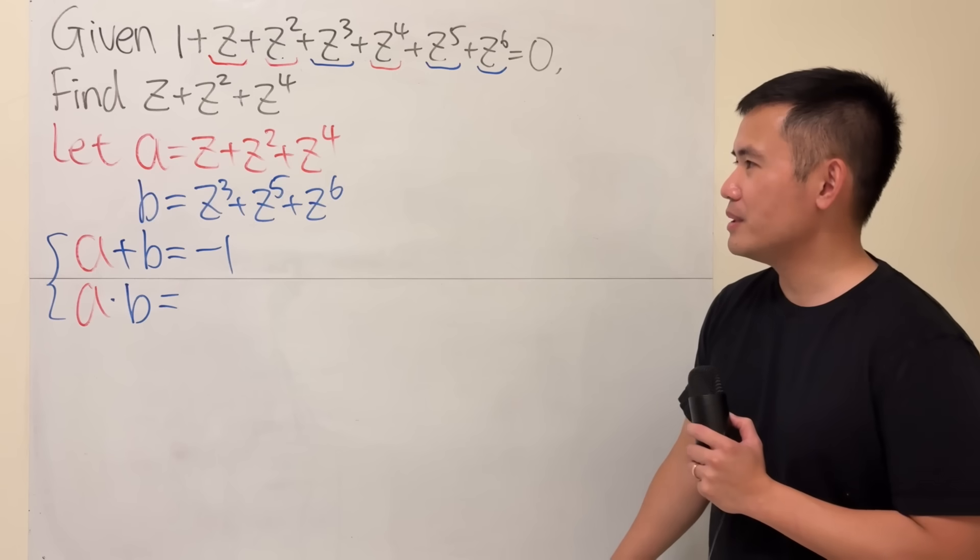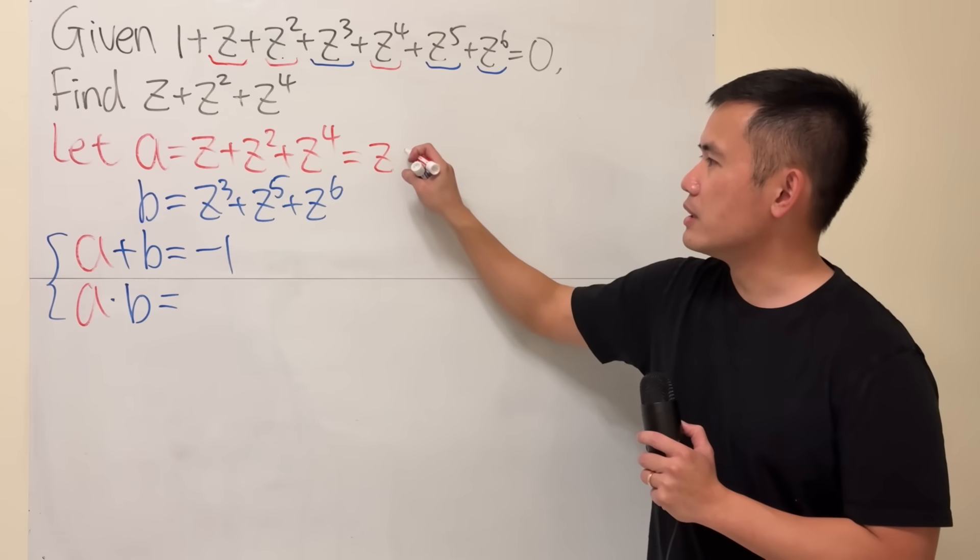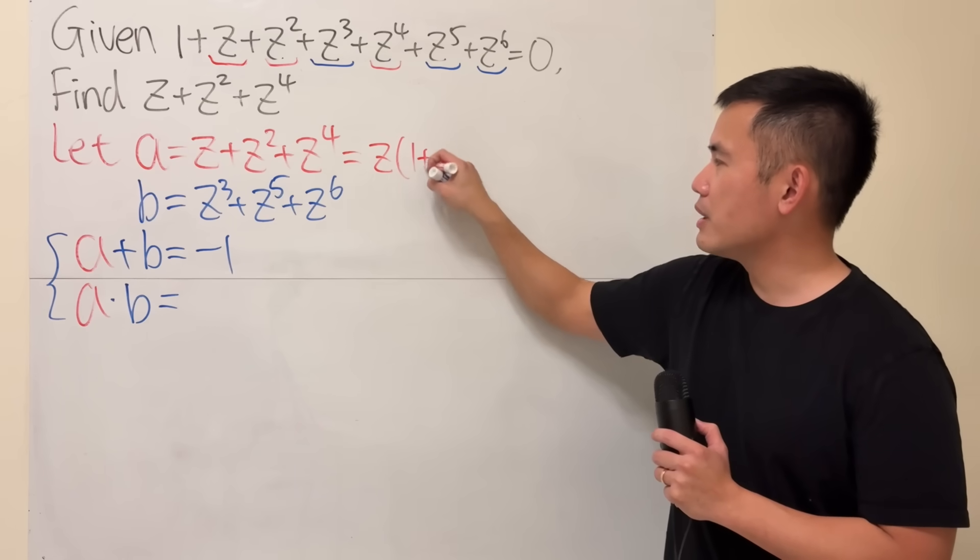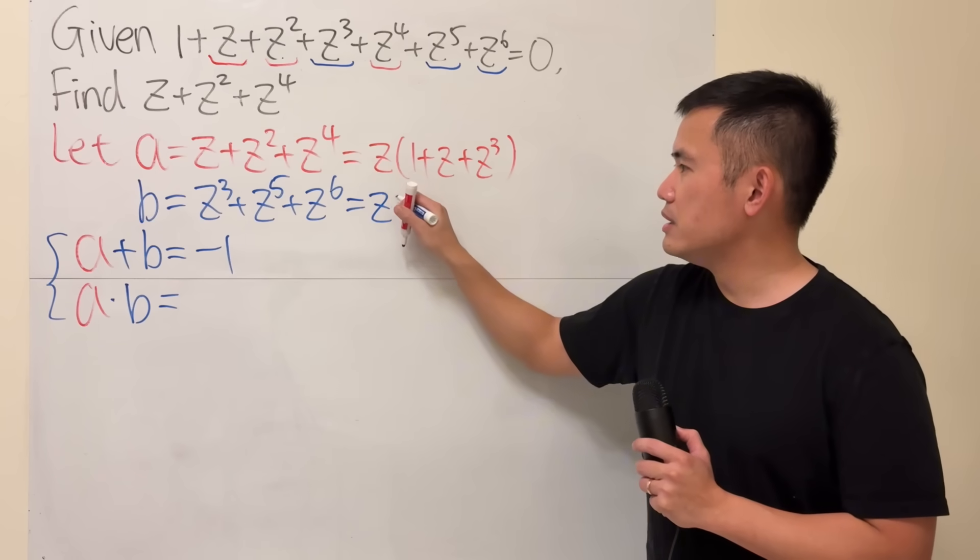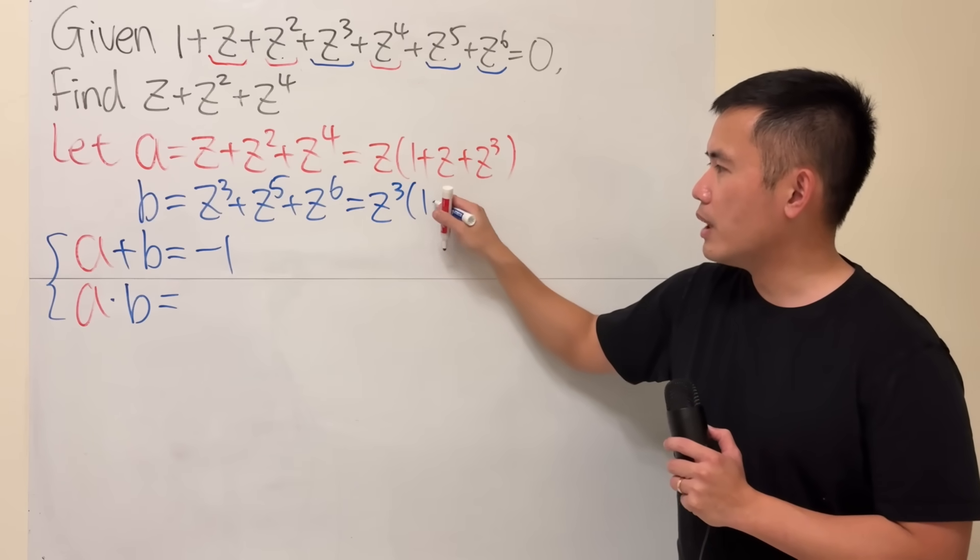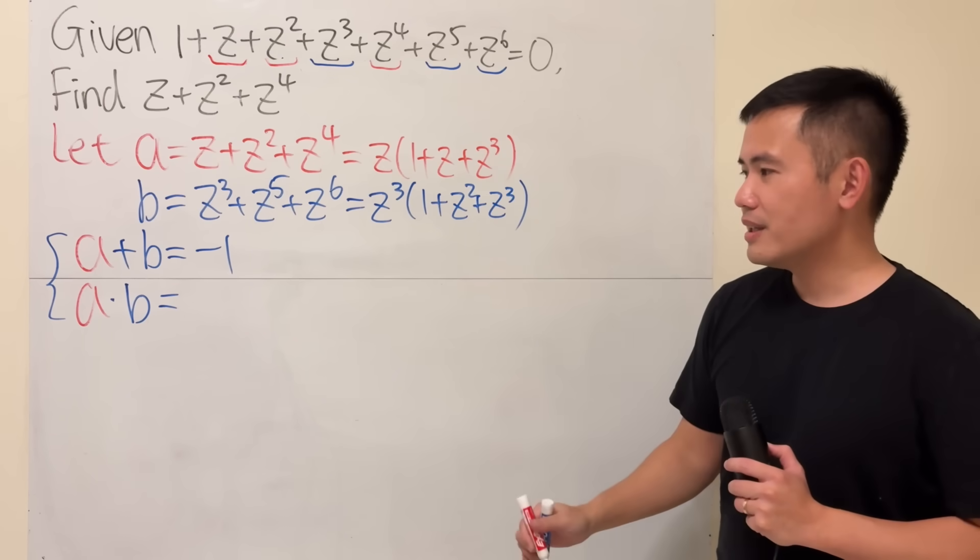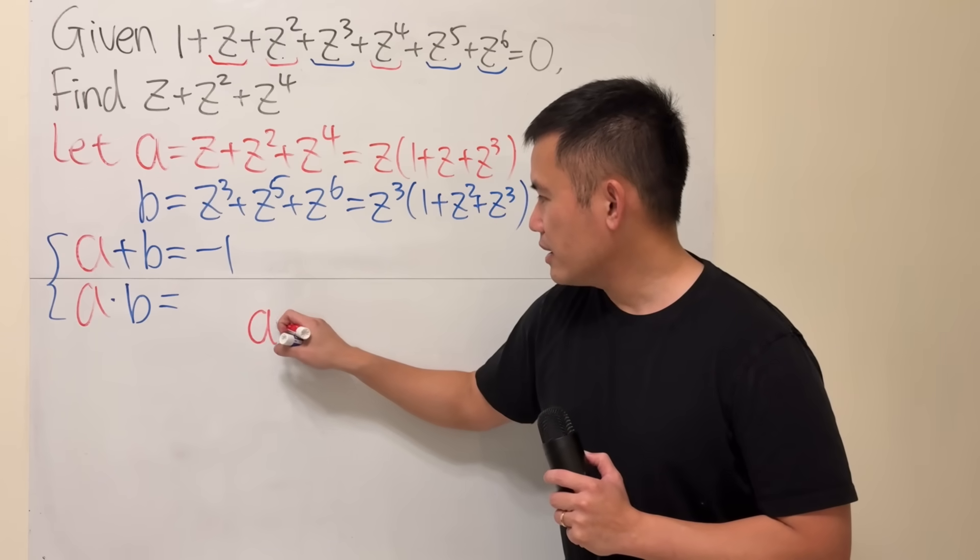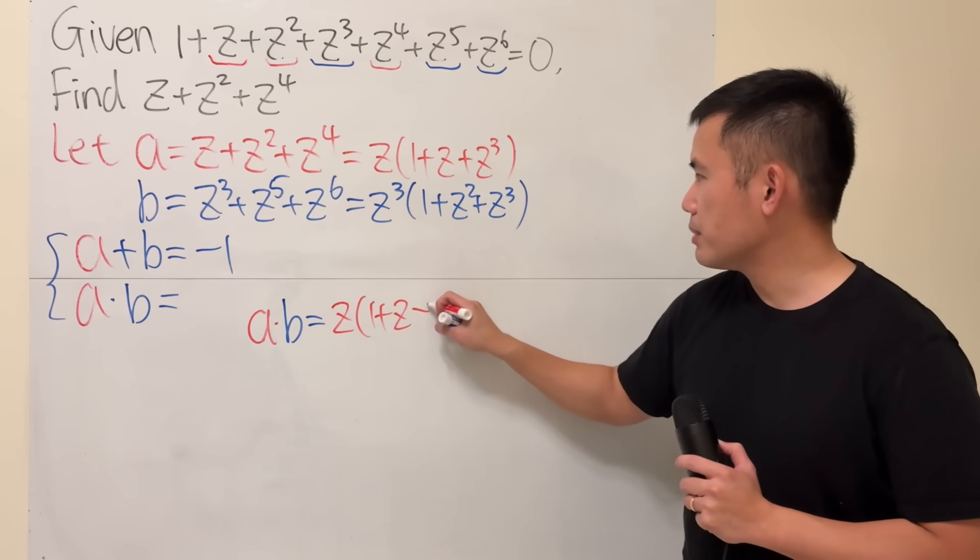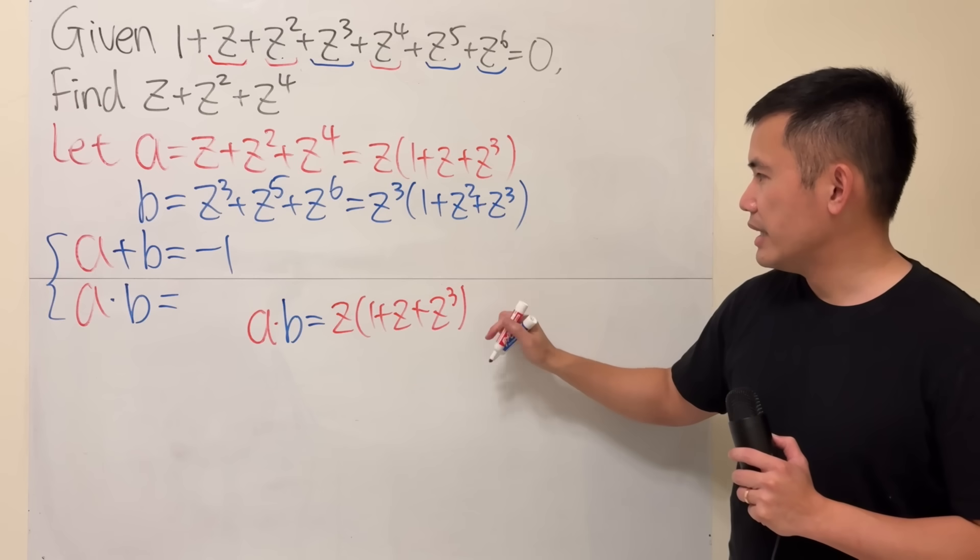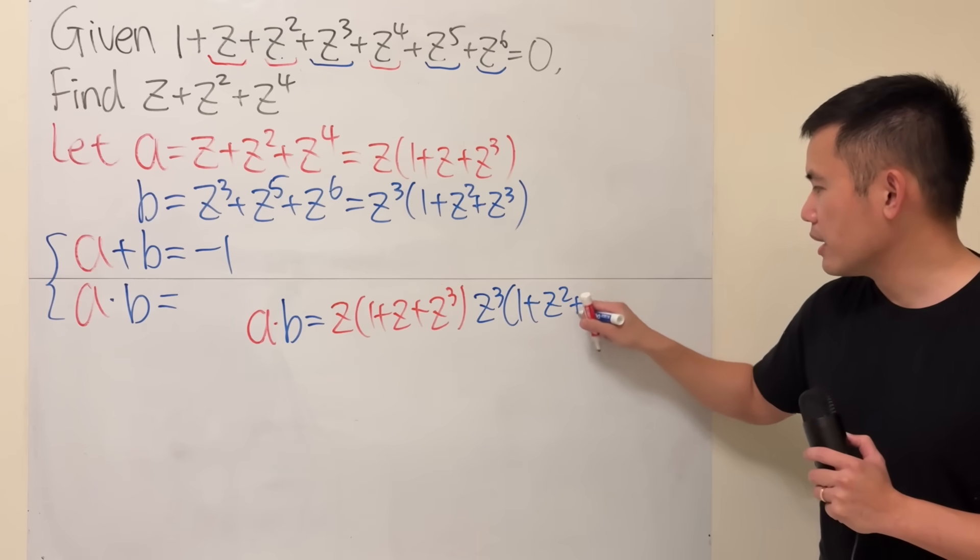Now, we are going to compute a times b. Hopefully, this right here will give us a nice result. If so, we are in good shape. Before we multiply, notice that we can factor. Right here, I'm going to factor out a z. So, we get z times 1 plus z plus z cubed. From here, I'm going to factor out z cubed. And then we get z cubed times 1 plus z plus z squared.